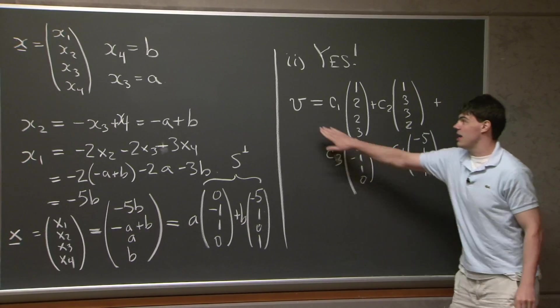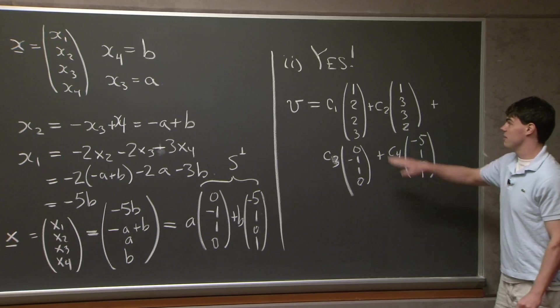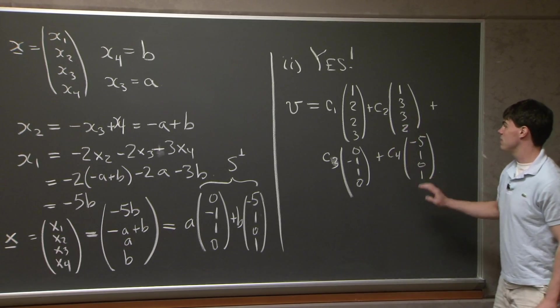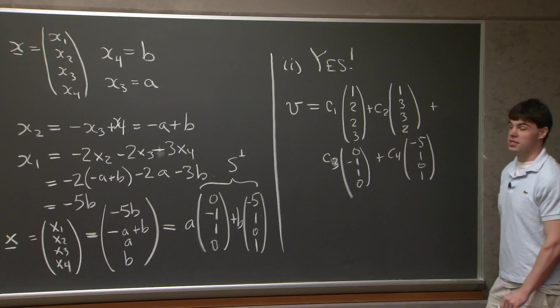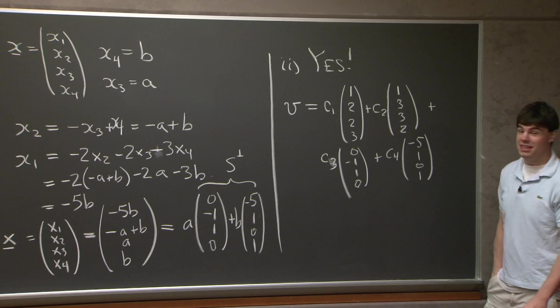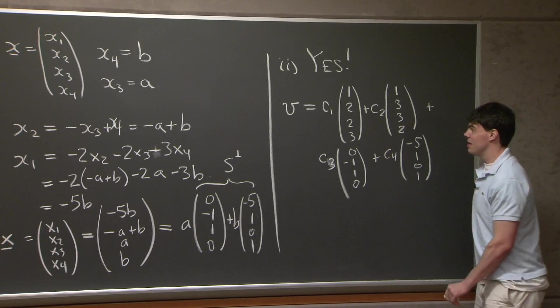So c1 and c2 are multiplying the vectors in S, and c3 and c4 are multiplying the vectors in S perp. So the question is, given any v, can I find constants c1, c2, c3, c4 such that this equation holds? And the answer is yes.